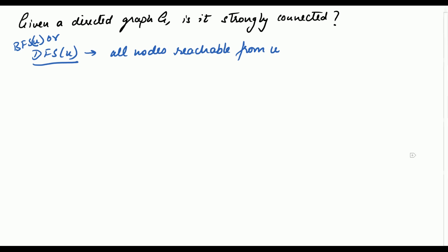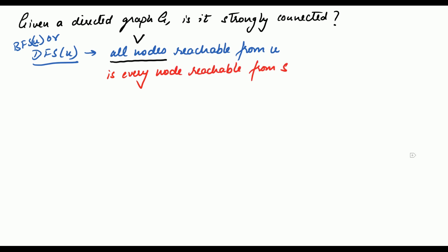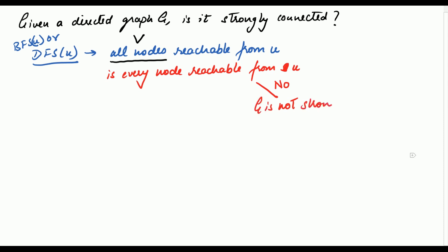What you need to verify is if the set of nodes given by this algorithm is actually the entire vertex set of the graph. In other words, you are asking if every other node in the graph is reachable from U. If the answer is no — meaning the set of nodes given by DFS or BFS does not comprise the entire vertex set and some nodes are missing — then you can straight away conclude that the graph is not strongly connected.